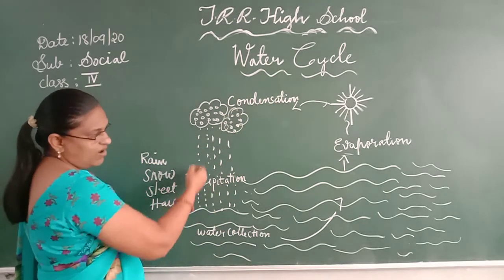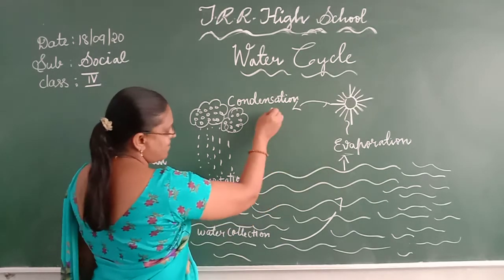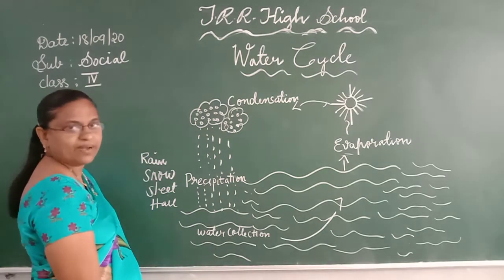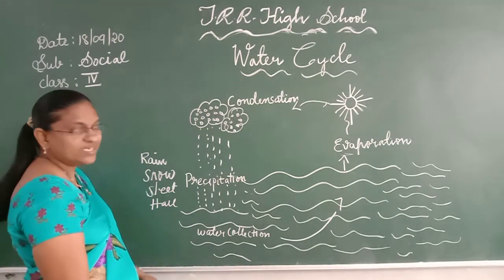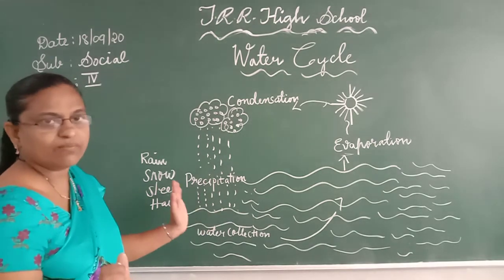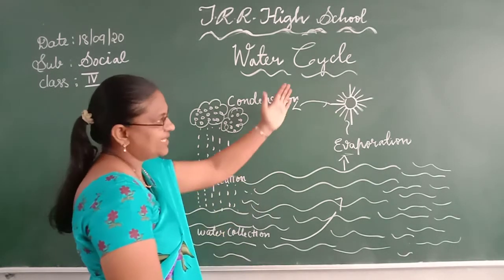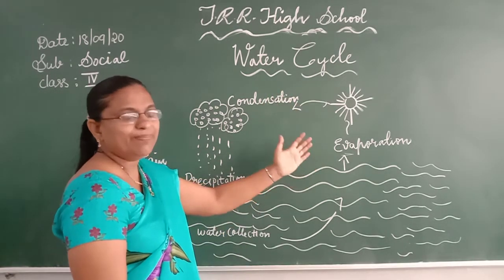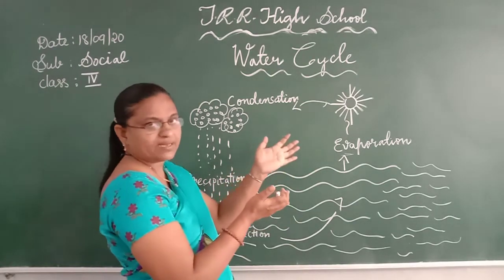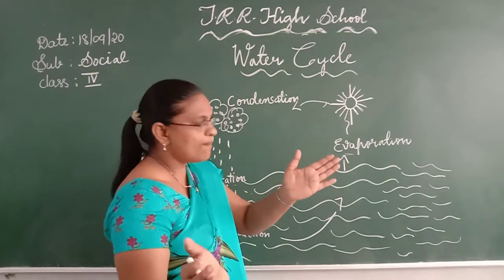You can draw this picture in your book and label the parts. One more time, listen carefully. The water in the water body, by the heat of the sun, becomes warm and becomes water vapor. This process is called evaporation.